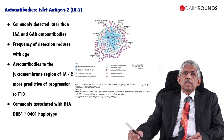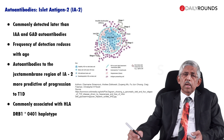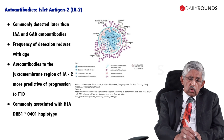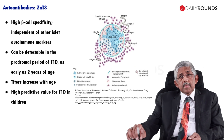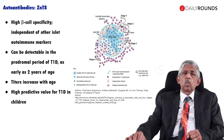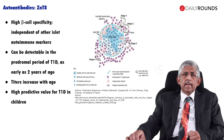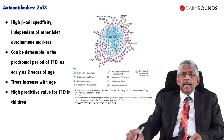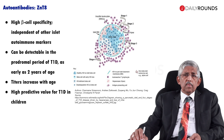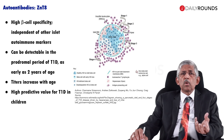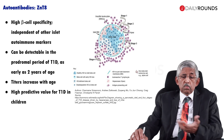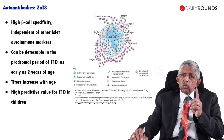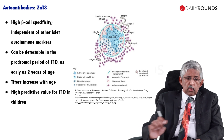IA2 is also good, but Indian studies — both done in Delhi and in Chennai by our group — have found that the sensitivity of IA2 is not very good in Indians. The zinc transporter is a more modern assay and we are doing it routinely at our centre along with the GAD antibody test. It is useful because some people who do not have GAD antibody will have the zinc transporter. If you can do both it is good, but if you are going to do only one, do the zinc transporter.